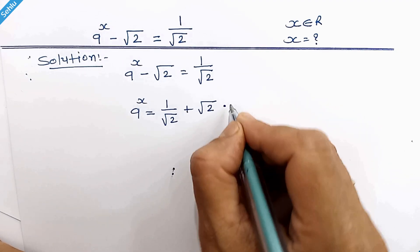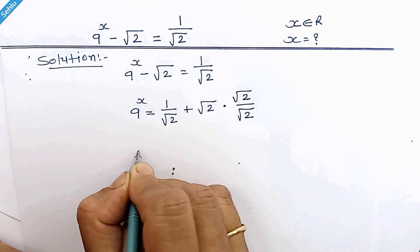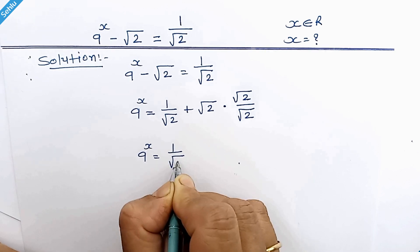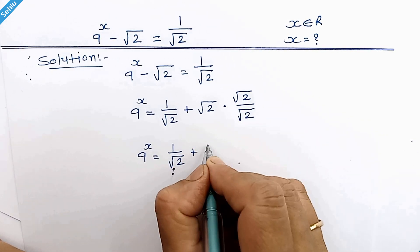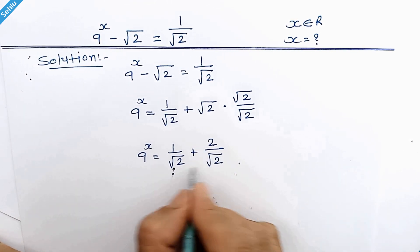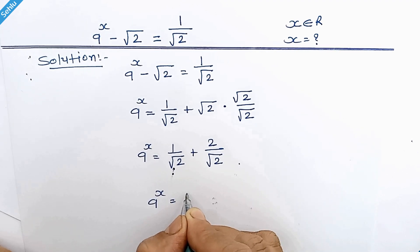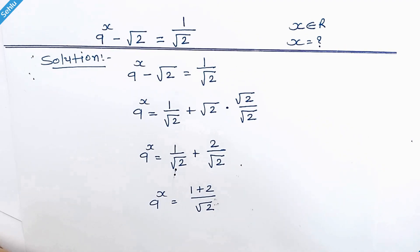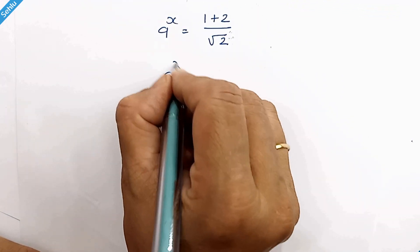We will multiply with square root of 2 over square root of 2. Square root 2 times square root 2 is 2. Now we have the same denominator, so we can write it as 9 to the power x is equal to 1 plus 2 over square root of 2.